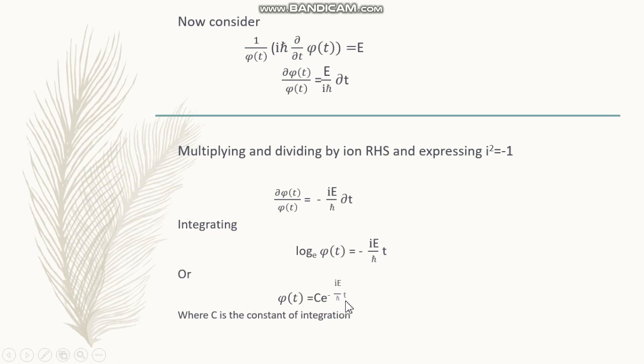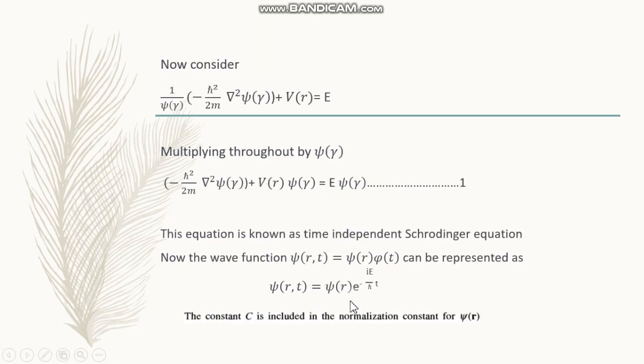Otherwise the log term can be represented as phi of t is equal to C e raised to minus i E by h-cross into t, where C is a constant of integration. This is the phi of t form.